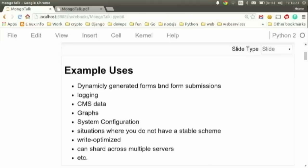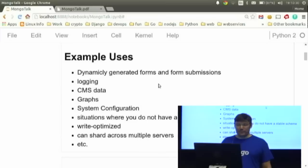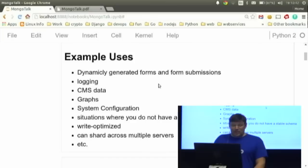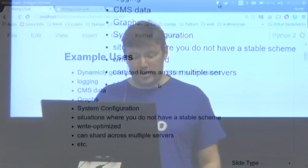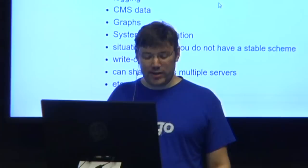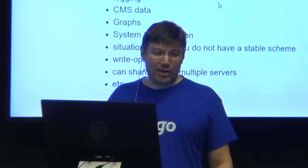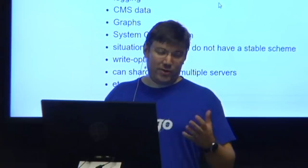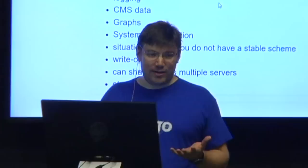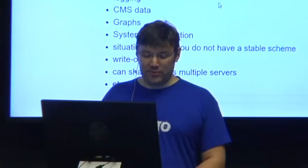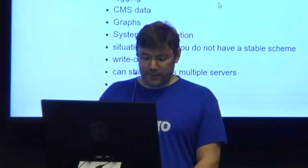Some example uses of MongoDB: if you have dynamic forms that you want to generate on a website for a form builder tool, MongoDB might be a good application. For dynamic logging, kind of time series data where each document would be a point in time. Similarly for graphs, content management systems, system configuration management — situations where you don't have a stable schema and need to do a lot of writes. When I was scraping recipes with some friends, recipes on websites are pretty dynamic, so we used Mongo to store that data loosely.